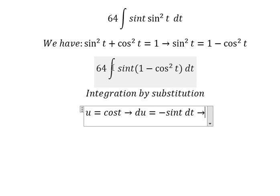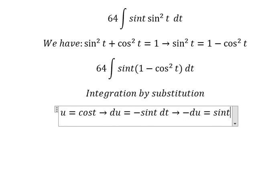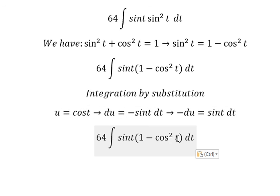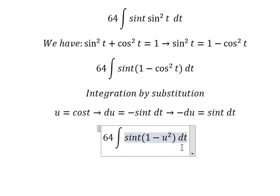Because we don't have the negative sign in here, so I will put the negative to the left. So this one we change by u, and sine t dt we change by negative du.